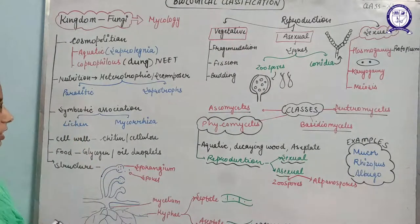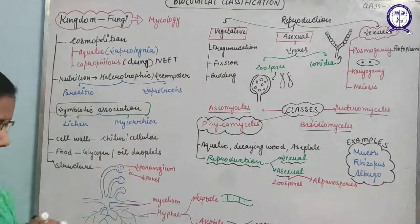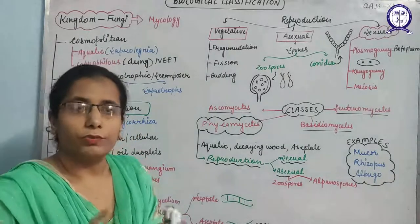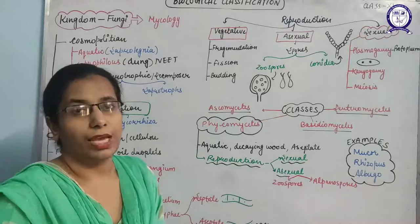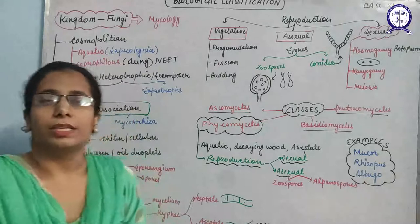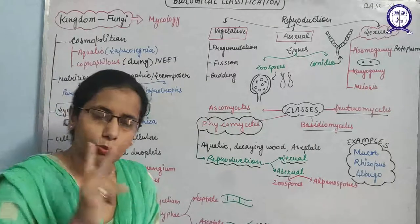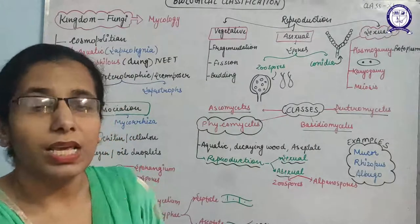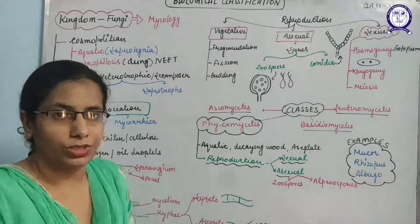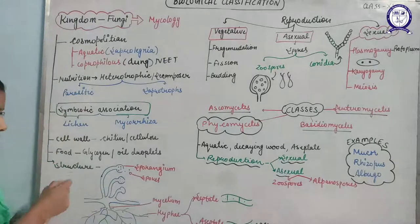Fungus also shows symbiotic association. Symbiotic association is a phenomenon where two organisms of two different species live together in a mutual way where they benefit each other. If two types of organisms are there and they mutually provide benefit to each other, that is known as symbiotic association. Fungus also shows this type of association.